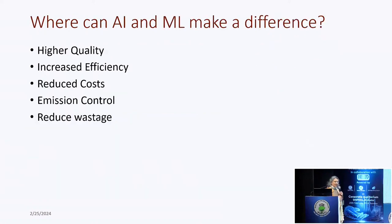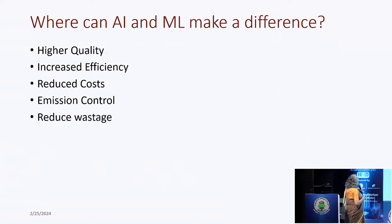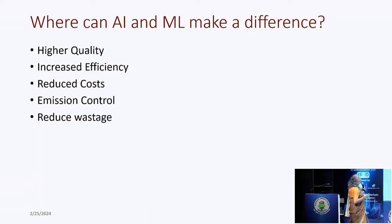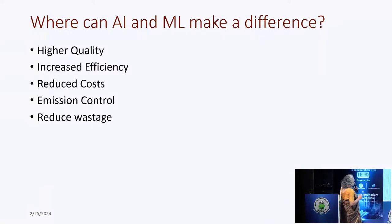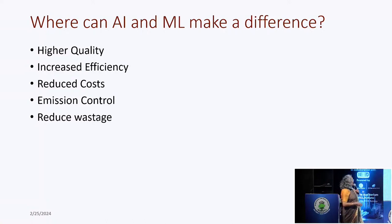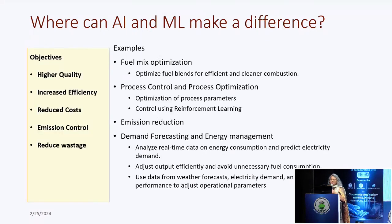In a power plant — and please pardon my lack of knowledge — in any manufacturing plant, power plant, or chemical plant, where can machine learning or AI make a difference? We want higher quality output, definitely increased efficiency, reduced cost, and we need to stick to the norms, whether it's emission control, reduce wastage, and so on. These are some of the places where AI can be used.